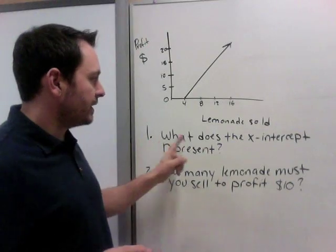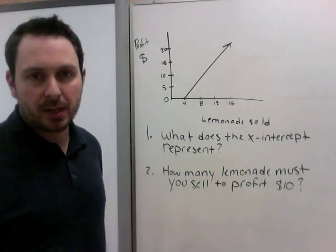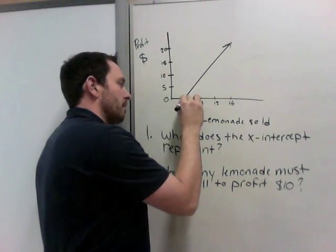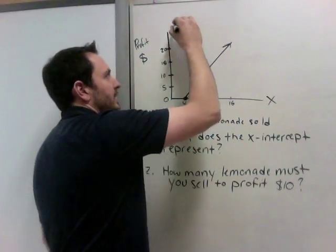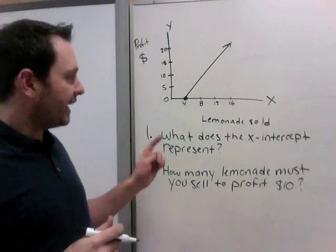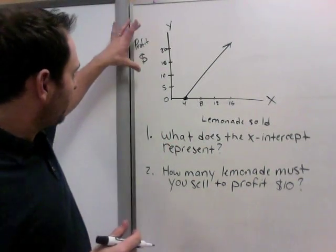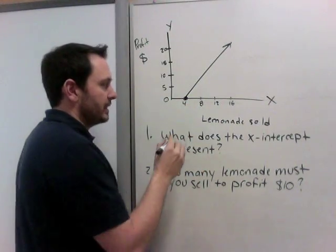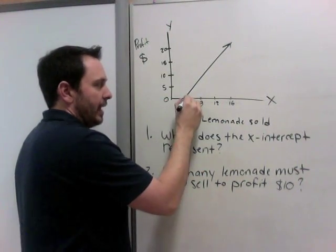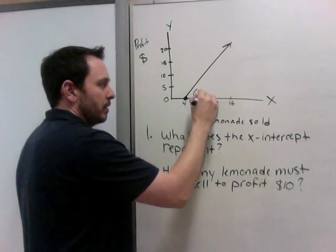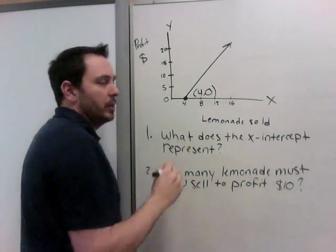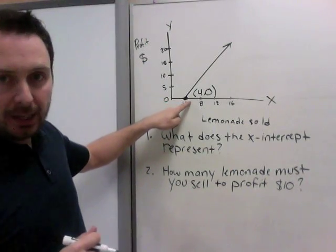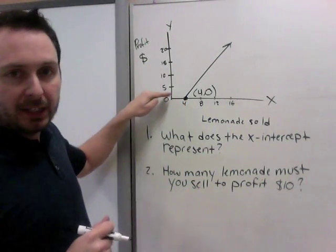So in this question, first, what does the x-intercept represent? First, let's find the x-intercept. Maybe we always have x-axis, y-axis. Well, the x-axis represents, if this is the profit, the x-intercept represents, it is x is 4, y is 0 at that point. So what that means is we need to sell 4 lemonades to start breaking even.